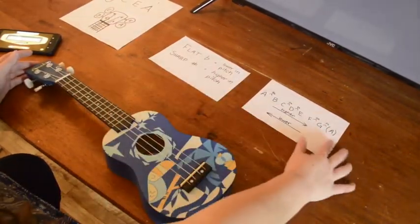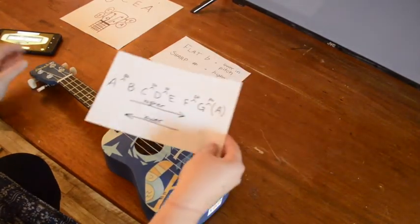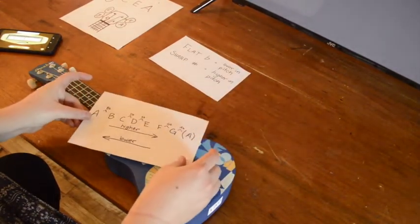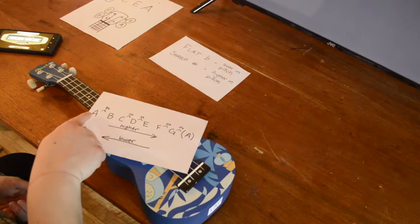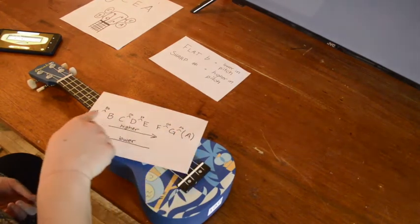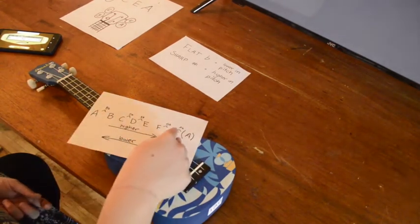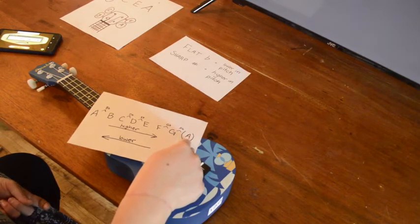So before we do that, let's talk a little bit about the musical alphabet. Now the musical alphabet goes from A to A: A, B, C, D, E, F, G, and then it repeats going back to A.